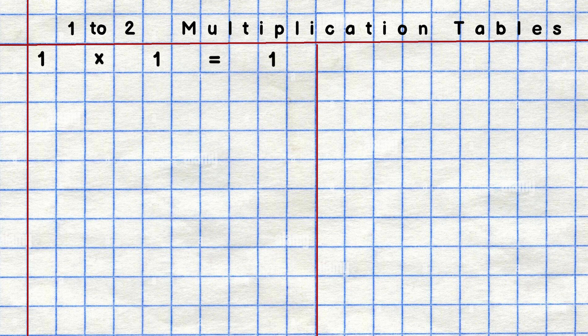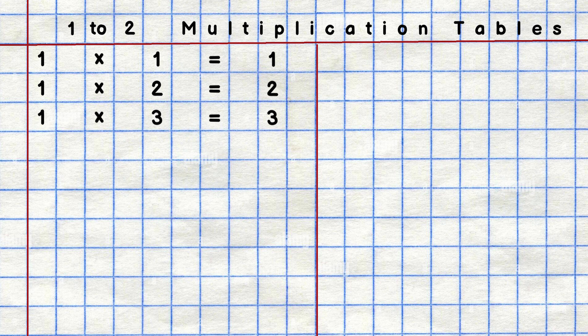1 1s are 1, 1 2s are 2, 1 3s are 3, 1 4s are 4, 1 5s are 5.